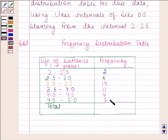Following this same pattern, we find the frequencies of the other intervals. Adding all these frequencies gives us 40.